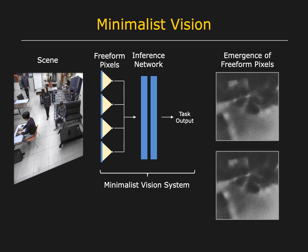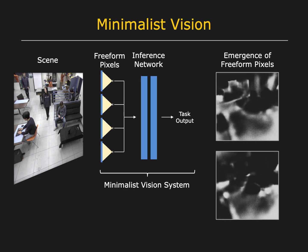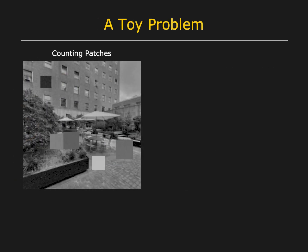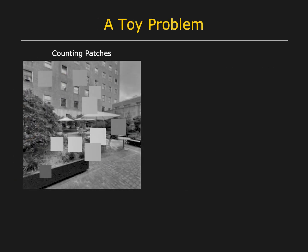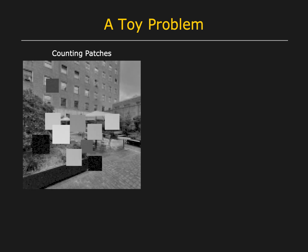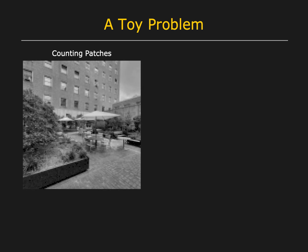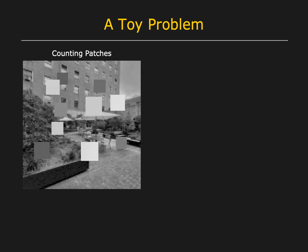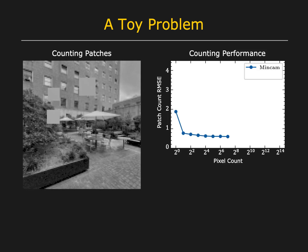Here we see the emergence of two freeform pixels during the training process. Consider the toy problem of counting the number of patches overlaid on this scene. The patches can have an arbitrary location and brightness, partially overlap each other, and even vary in size. We have trained minimalist cameras for this task. This plot shows the performance of minimalist cameras with different pixel counts in terms of the RMS error in the patch count.